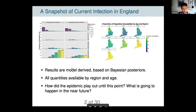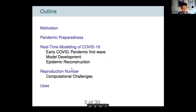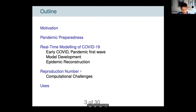We can also put this into a map to see how it fits by region and by age group — the age profile is shown on the left. The talk will quickly cover why we do what we're doing, the head start we had through pandemic preparedness work, the stages of COVID modelling from the first wave and how we've had to develop the model over time, results from epidemic reconstruction, the reproduction number — which was a key headline figure early on — and some discussion of computational challenges and how we've used the model.